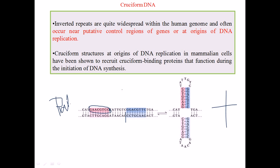Cruciform DNA is formed due to the presence of gentle heat that disrupts hydrogen bonds. The first step is to disrupt the hydrogen bonds between the double strands of DNA. After disrupting these hydrogen bonds, the two strands become loosened from each other. A few regions remain linked, but most of the strands are free. These regions, such as CCT, have a tendency to bind with their complementary sequences on the opposite side due to the palindromic sequences.